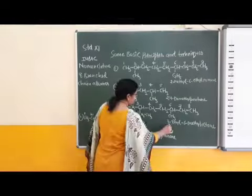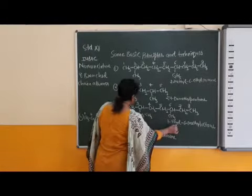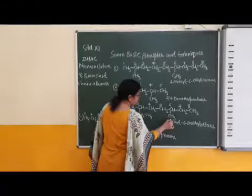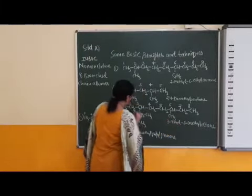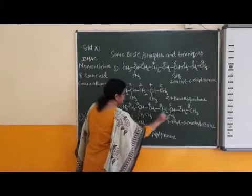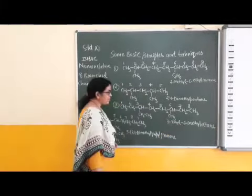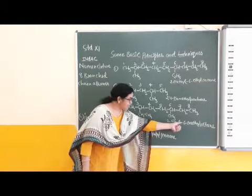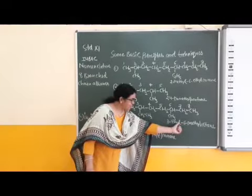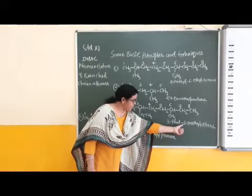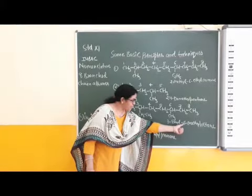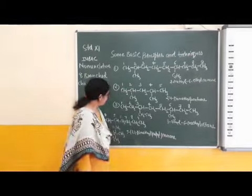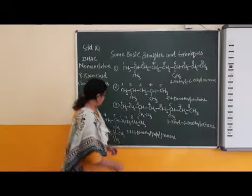3-ethyl for the ethyl group, 6-methyl, and 'oct' for eight carbon atoms, and 'ane' for a single-bond system. A hyphen is placed between the substituent and number, and again between the number and substituent. Next example.